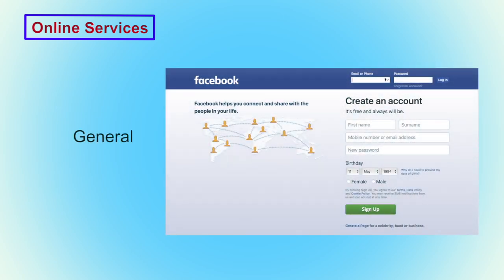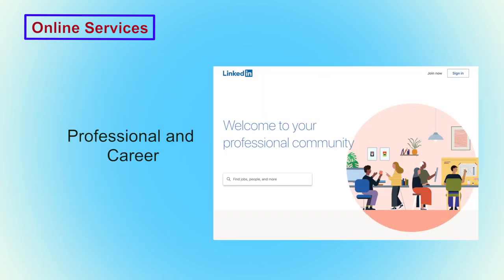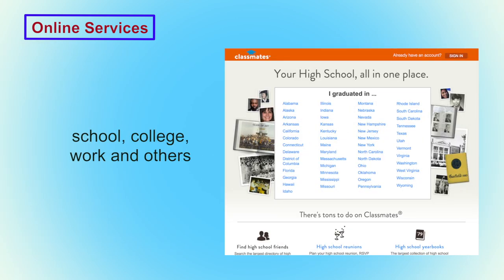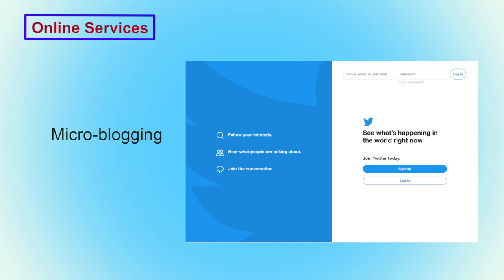Facebook is one of the most popular social networking websites, which is for general purpose and majorly attracts youth. MySpace.com is another general-category site similar to Facebook with a global presence. LinkedIn is for professional and career purposes, where different experts interact with similar professionals to increase career opportunities. Classmates.com targets schools, colleges, and different work environments. Twitter is another social networking website — a micro-blogging website where you can post your ideas or thoughts on any social issue.